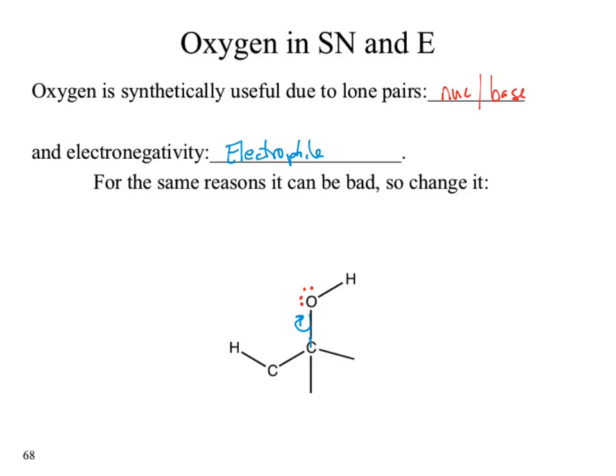Oxygen can also withdraw electrons from the hydrogen, meaning the alcohol functional group could also act as an acid. So alcohols can be excellent synthetically because we have access to all of this chemistry. But that also means I could try to run an acid-base reaction and instead it does a nucleophilic reaction, or I could try to have it act as a base but instead it acts as an electrophile. Alcohol functional groups are very useful synthetically, but they can drastically convolute and muddy the waters for running a chemical reaction.